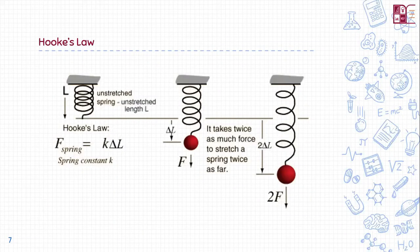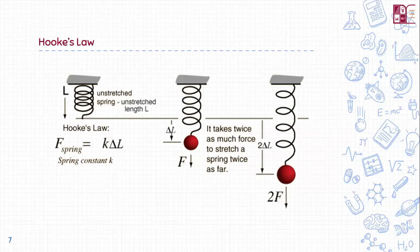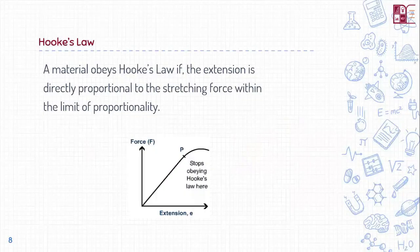Hooke's Law explains the physics of elasticity for a spring. There is an unstretched spring whose length is called the unstretched length. Hooke's Law states that when you apply a force there is a change in length proportional to that force, governed by the spring constant k. So F equals k times the change in length. It takes twice as much force to stretch a spring twice as far.